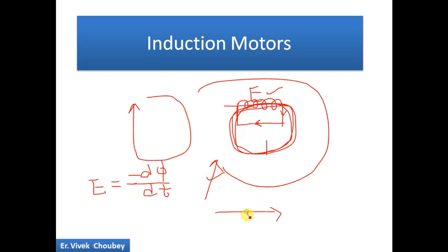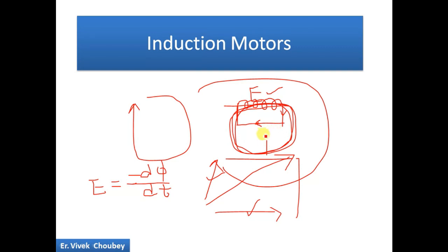Both the stator flux and the rotor flux are generated. The rotor flux tries to compensate the stator flux. They are at a different angle, so when we vectorially add them there is a resultant magnetic flux. The rotor is free to rotate, so under the effect of this resultant magnetic field the rotor begins to rotate.